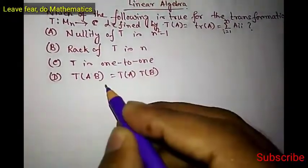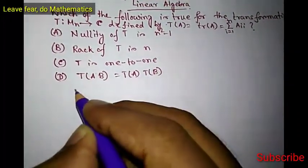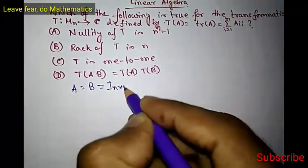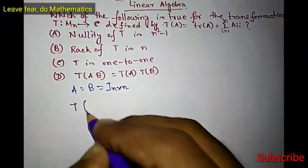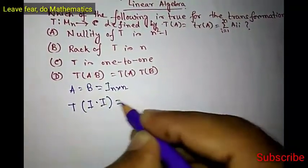We will start from option D. What is given? T(AB) equals T(A)T(B). So let us take A equals B equals I, the n by n identity matrix. Then what is T(AB)? T(AB) means T(II), which is T(I) because I times I is I.